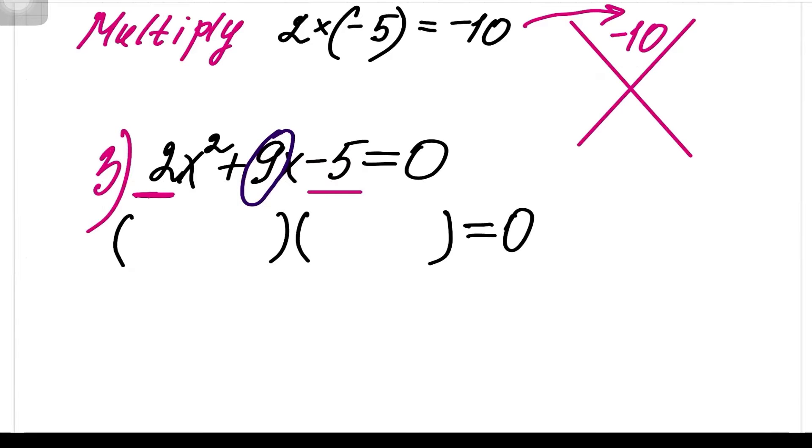Now, the middle coefficient, or the second coefficient in front of x, goes on bottom of your X. Now, we are going to look for two numbers that multiply to negative 10, so their product gets to negative 10, and they add up to 9.